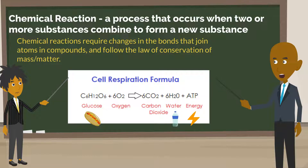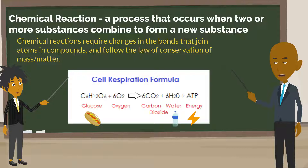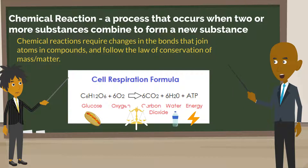If you notice, we have six carbon on the left and six carbon on the right. Then we have 12 hydrogen on the left and 12 hydrogen on the right. And we have 18 oxygen on the left and 18 oxygen on the right. Notice that we have the same amount of elements in our reactants and products, and this is how both obey the law of conservation of mass and matter.